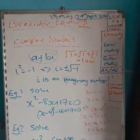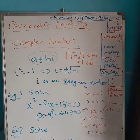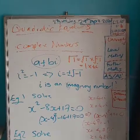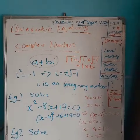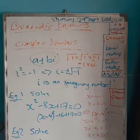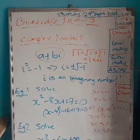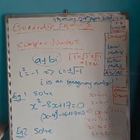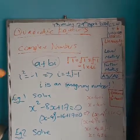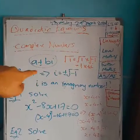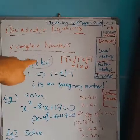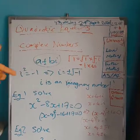When the discriminant is bigger than zero, we get two real roots because we have the square root of a positive number. If it's equal to zero, we get a repeated root. If it's less than zero, we have no real roots — what we call complex roots. These follow the form a plus or minus bi, where a is a real number and b is the coefficient of the imaginary part.